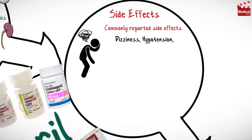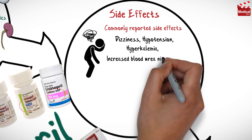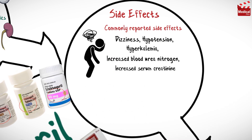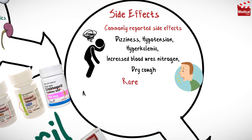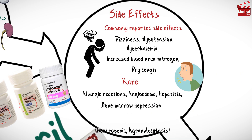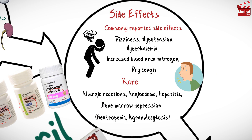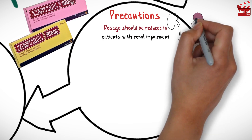Commonly reported side effects of lisinopril include dizziness, hypotension, hyperkalemia, increased blood urea nitrogen, and increased serum creatinine. It may also cause dry cough, and may rarely cause allergic reactions, angioedema, hepatitis, bone marrow depression, neutropenia, and agranulocytosis.